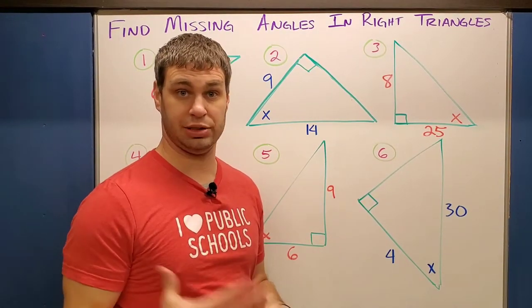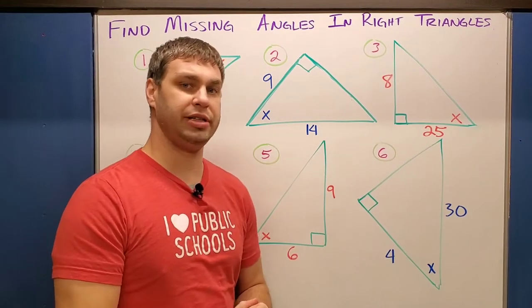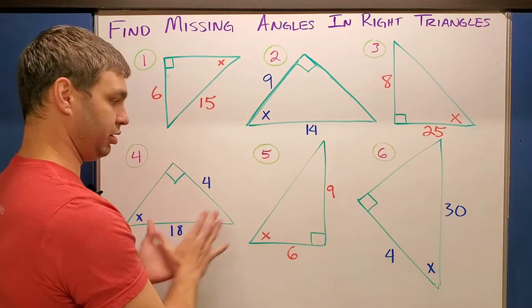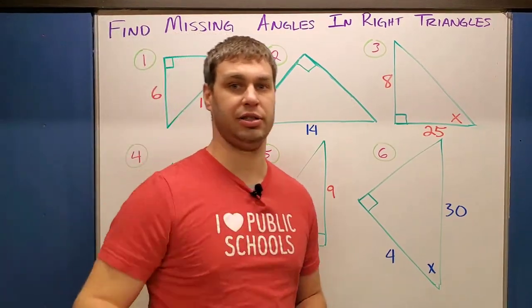You can drag the little red dot to whichever one you need, but otherwise I'm going to go through each of these. We're going to use inverse sine, inverse cosine, and inverse tangent to help us find these missing angles in our right triangles. Let's get into it.